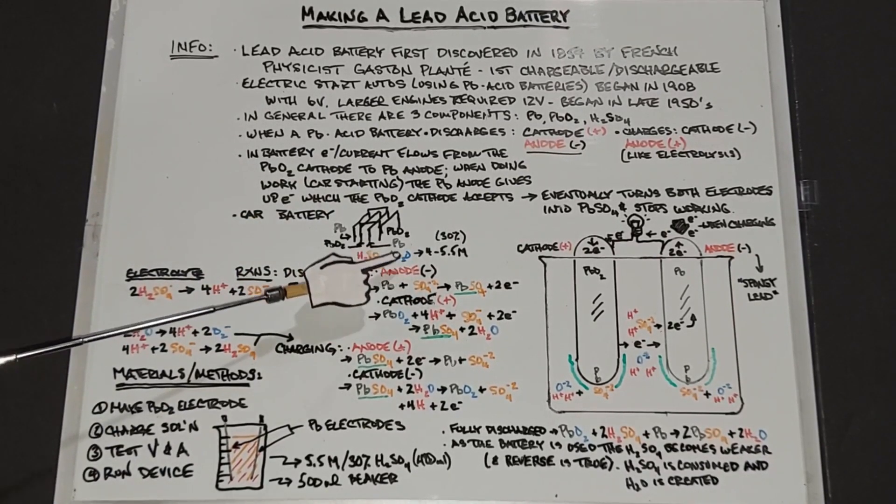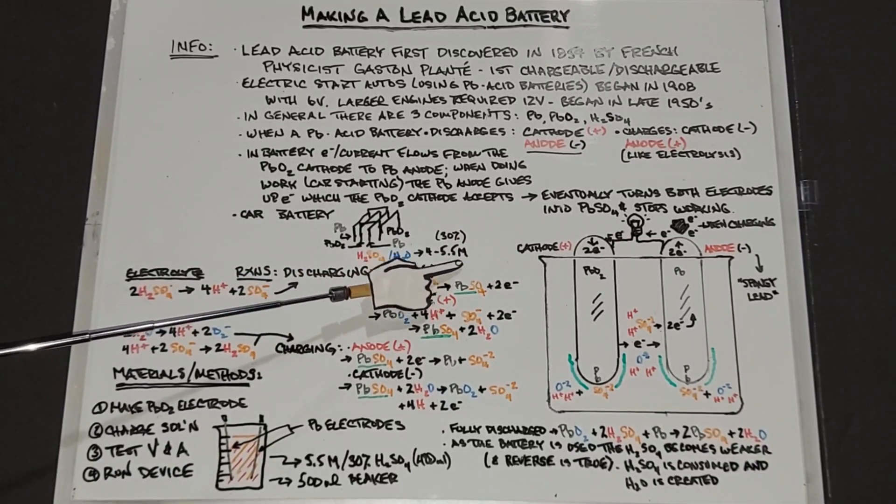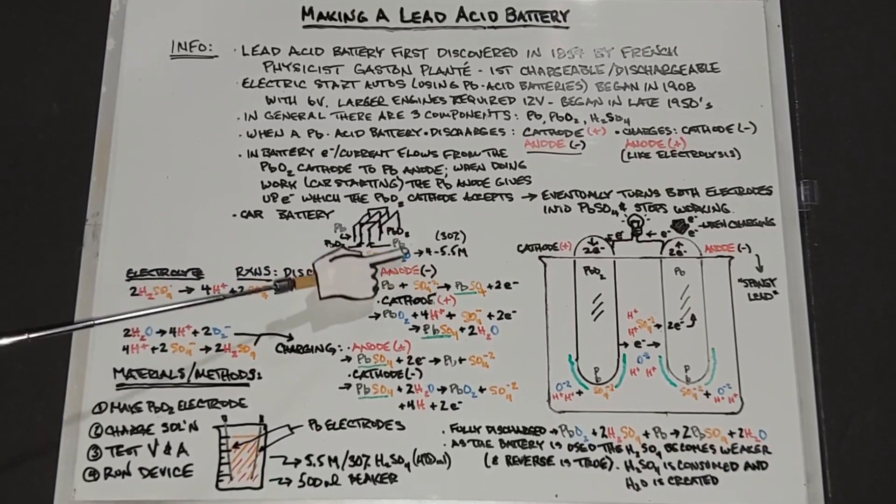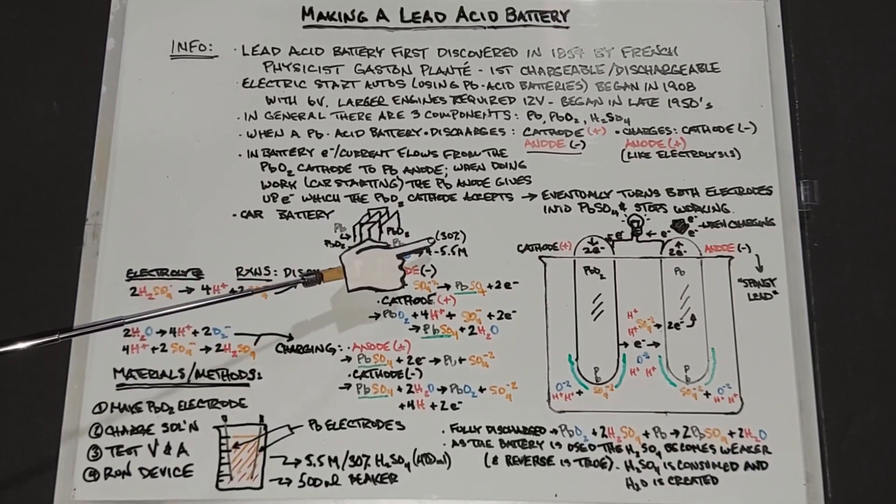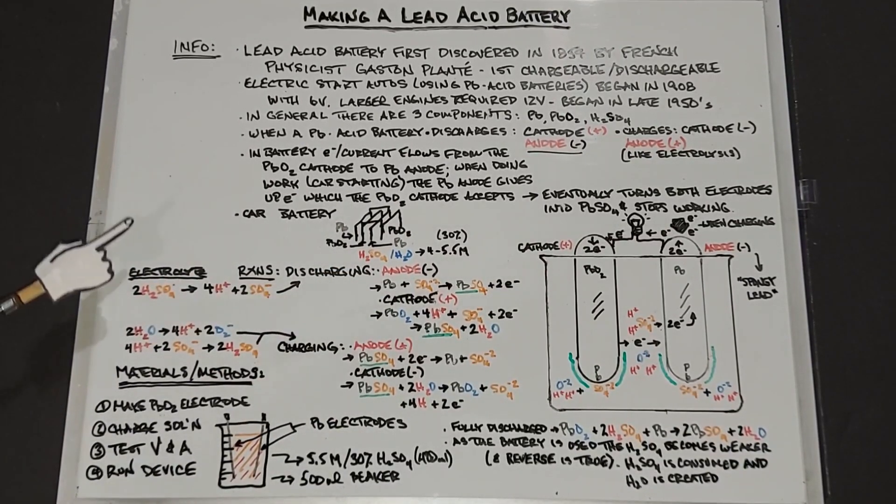The electrolyte again is the sulfuric acid mixed with some water. It is diluted and it can be anywhere from 4 to 5.5 molar. 5.5 molar is 30% sulfuric acid. That's what I'll be using in this experiment, but they can go down as low as 4 molar.